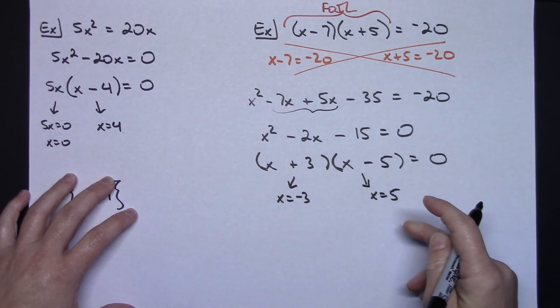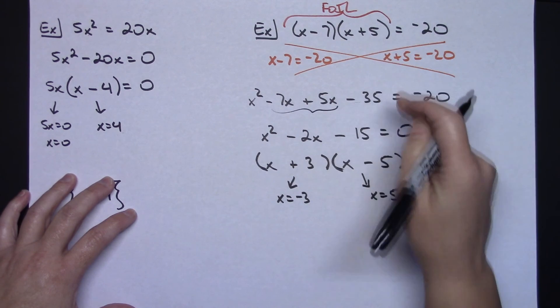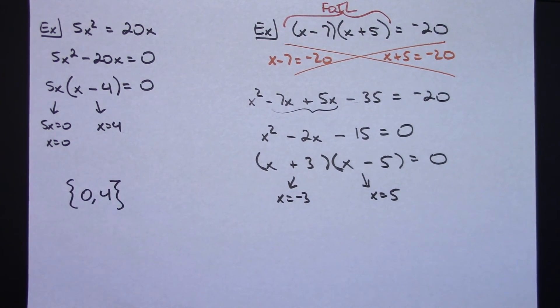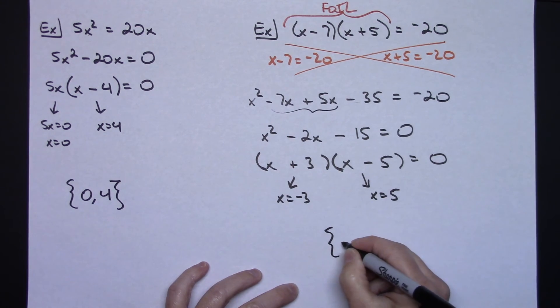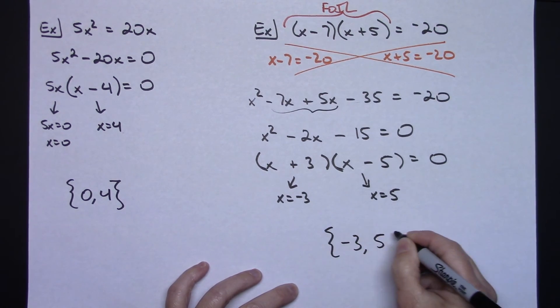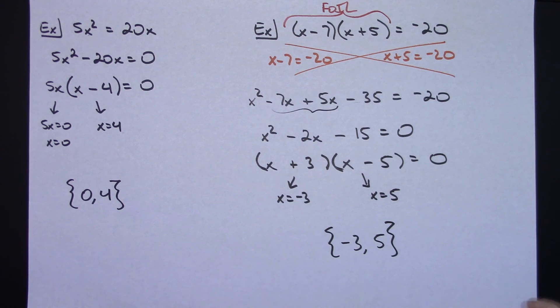And then here again, you need to check both of those answers in that equation. And I will leave you to do the actual check there. I'm almost positive that they both do work. So, my solution set here is a negative 3 and a 5.